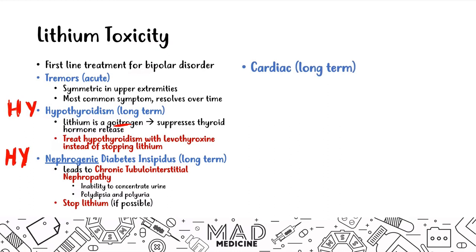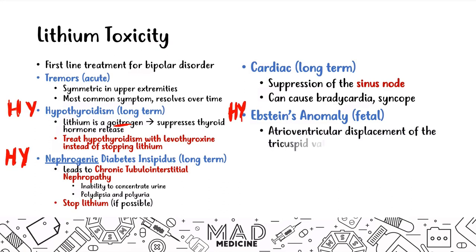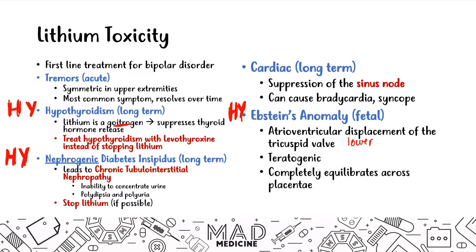The next side effect is cardiac effects of long-term lithium use — suppression of the sinus node, leading to bradycardia and syncope. Finally, the last high-yield thing you need to know is Ebstein's anomaly — an atrioventricular displacement of the tricuspid valve, where the valve becomes lower in position than it should be, more toward the ventricle than the atria. This is because lithium is teratogenic and can completely equilibrate across the placenta. In pregnant patients with bipolar disorder, you want to get them off of lithium.